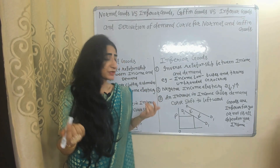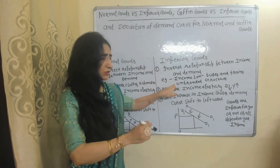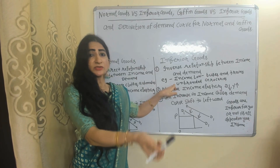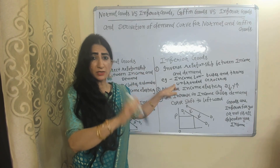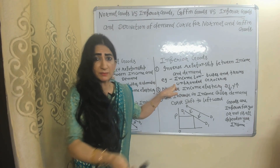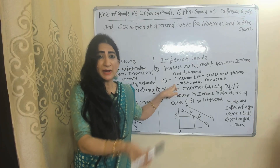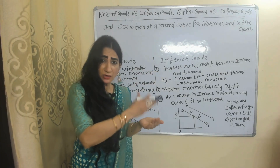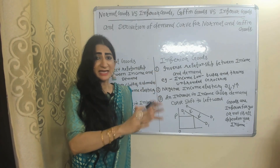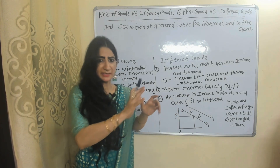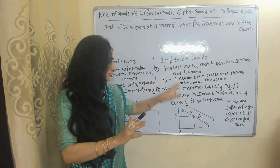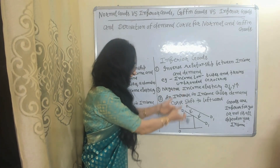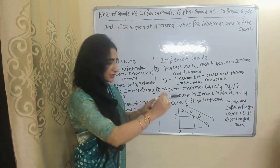For example, when your income is low you used to go by bus or train, but when your income increases you purchase your own car. Similarly, when your income was low you bought non-branded products, but as income increased you switched to branded products. So when income increases, you decrease demand for non-branded products. That's why there is an inverse relationship between income and demand, and income elasticity of demand is negative in case of inferior goods.